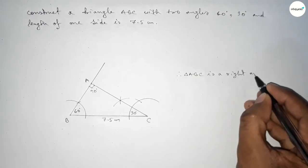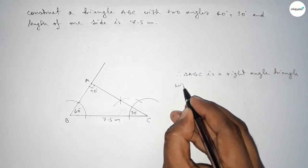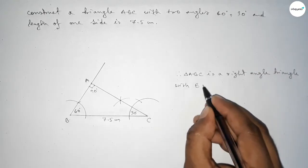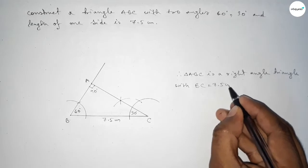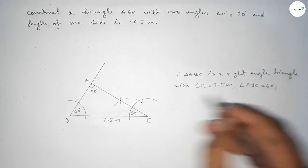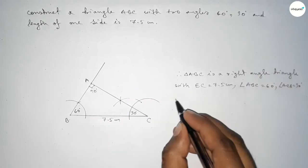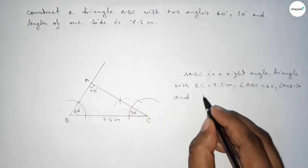Therefore ABC is a right angle triangle with the given side BC equal to 7.5 centimeters, angle ABC equal to 60 degrees, angle ACB equal to 30 degrees, and angle BAC equal to 90 degrees.